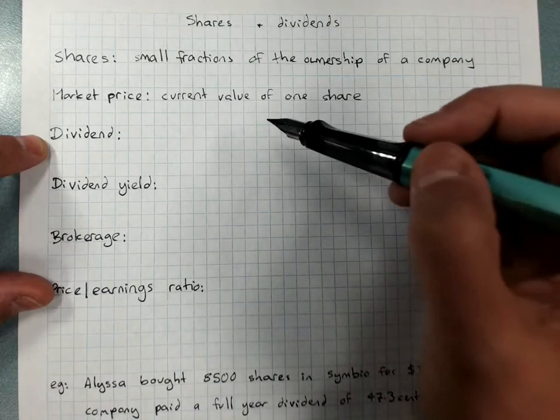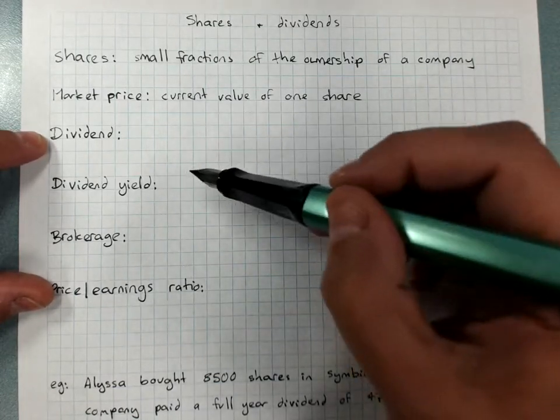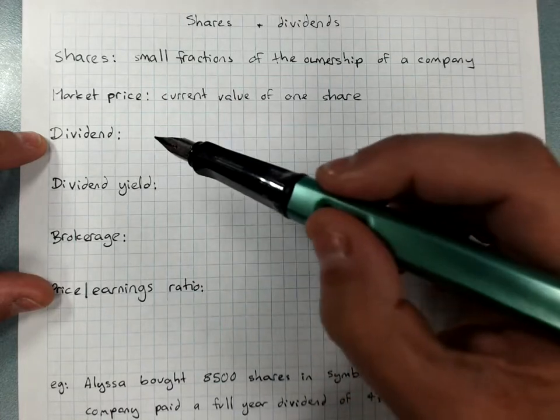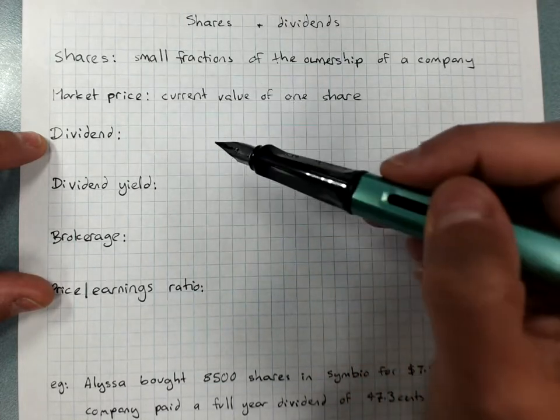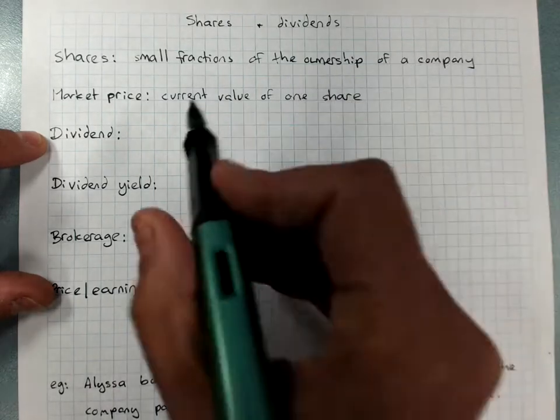Dividend. When a company makes profits, sometimes the company chooses to divide those profits between the shareholders. So for every share you own, you get a small amount of the profits.